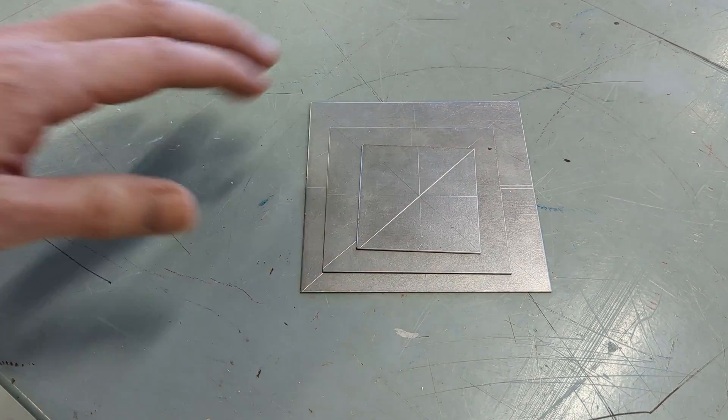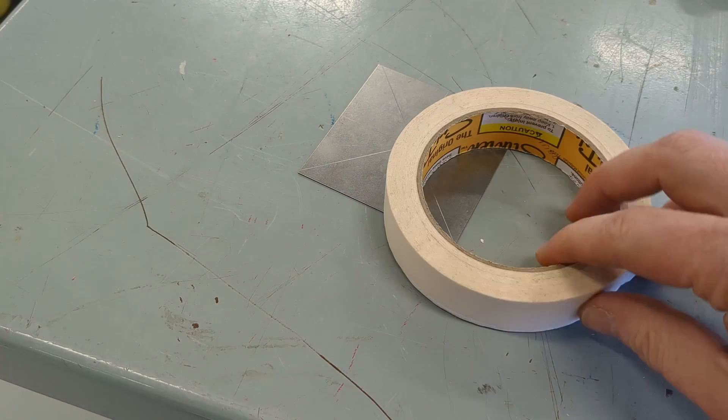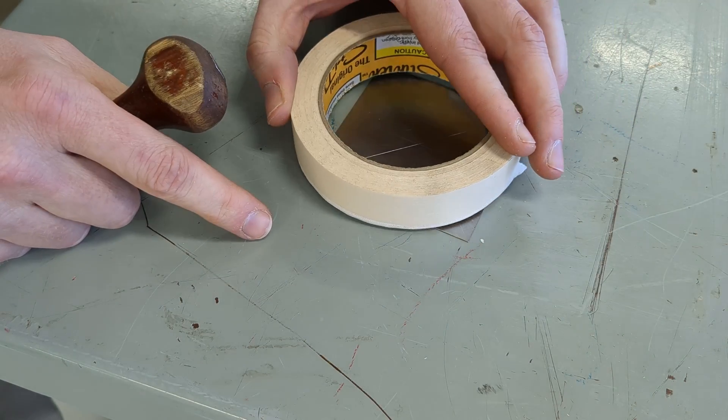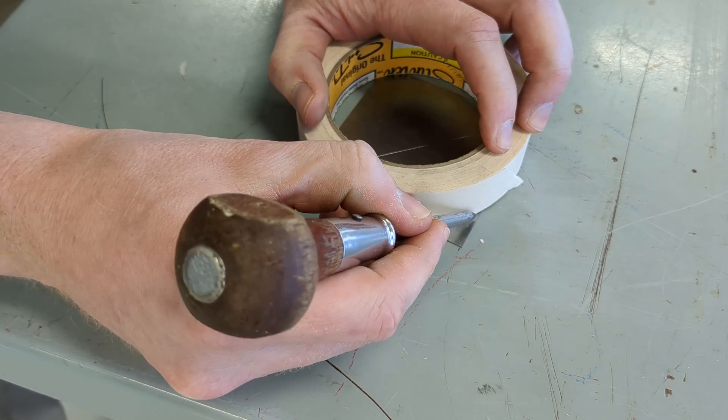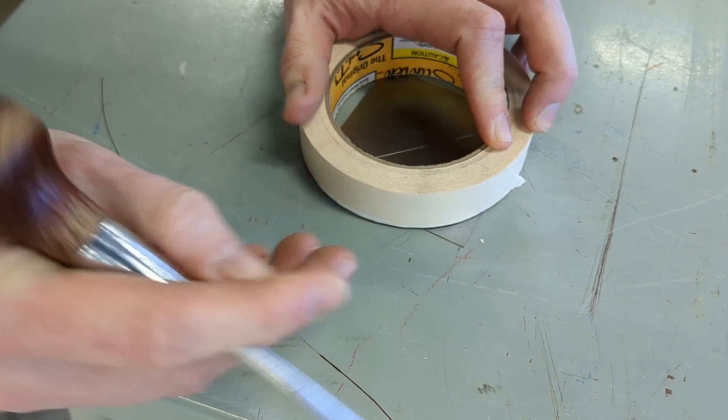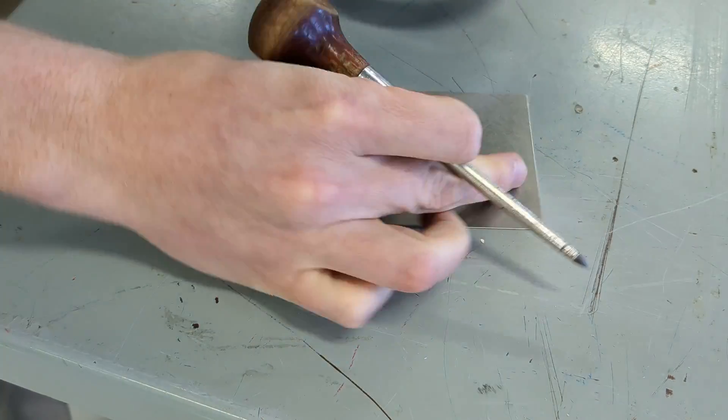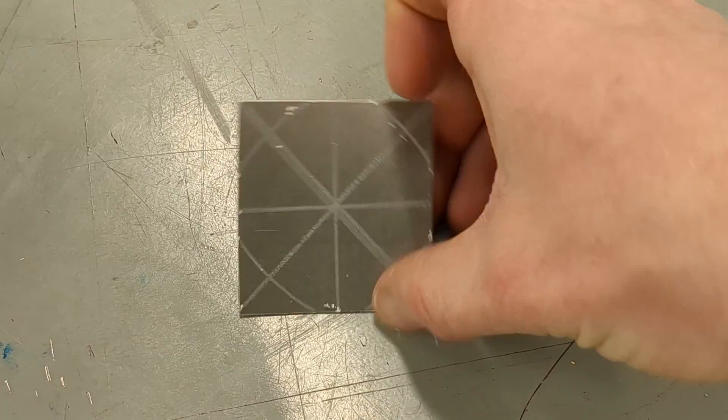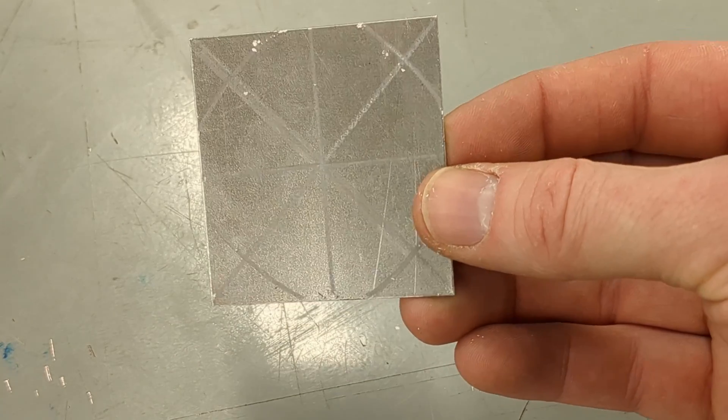Repeat for all your other pieces. Next, grab some circular object you have lying around—a roll of tape works great—and mark a radius line on each corner. Repeat for all your other pieces.